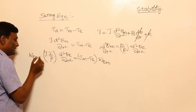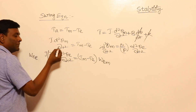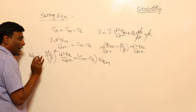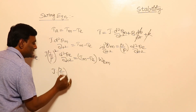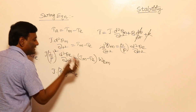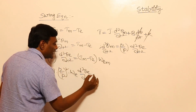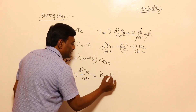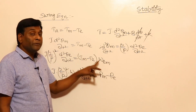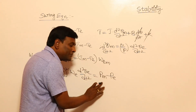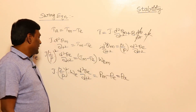Converting to electrical terms and multiplying through by synchronous speed (mechanical, then converting to electrical using 2/P), one more factor of 2/P appears. The equation becomes: J·(2/P)²·ω_electrical·(d²θ_e/dt²) = P_m − P_e. Torque multiplied by speed is power, so mechanical minus electrical power gives accelerating power.